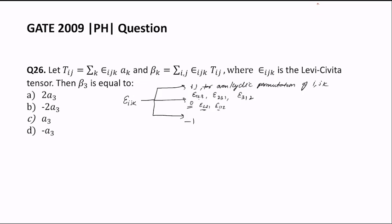The Levi-Civita tensor equals -1 for odd or non-cyclic permutations of ijk — for example ε_132, ε_321, or ε_213 all equal -1. Now in the question we need to find β_3, so we use these two given equations.